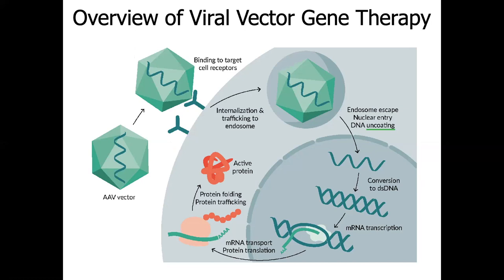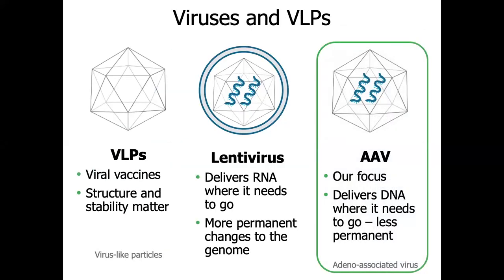Viruses are made from assembled proteins encapsulating genetic information, which delivers that genetic information into a host or patient cell. Then the cell uses its natural ability to make proteins. There are several kinds of viruses or virus-like particles that have been used in gene therapy. Virus-like particles, or VLPs, have generally been used for viral vaccines. Lentiviruses deliver RNA where it needs to go and makes more permanent changes to the genome. Adeno-associated viruses, or AAVs, deliver DNA where it needs to go and make less permanent changes.